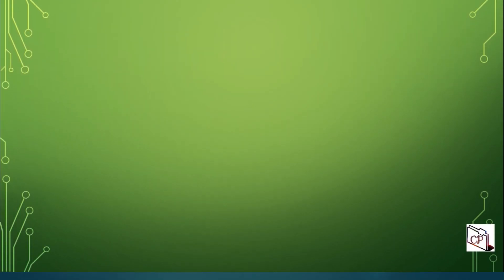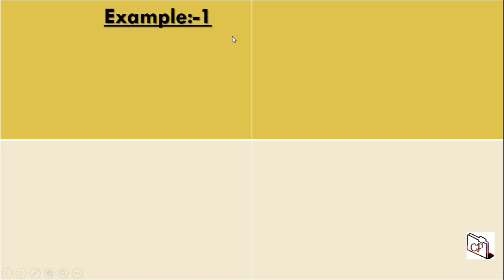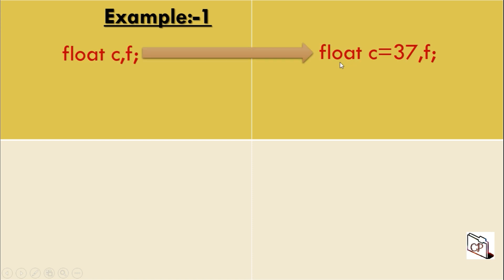Hey friends, let's see examples. Let's see how our program works step by step, so let's start the example. First, as you can see: float c is equal to 37. C is equal to 37.